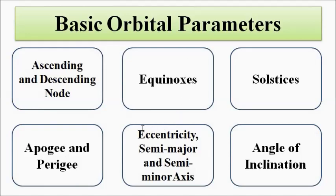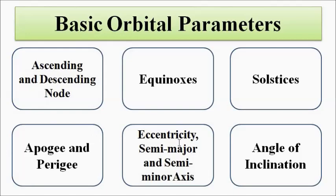A number of things come into play, for example: ascending and descending nodes, equinoxes, solstices, apogee, perigee, eccentricity, semi-major and semi-minor axis, inclination angle, elevation angle, azimuth angle, right ascension of node, and the true anomaly of satellite position. We will discuss these orbital parameters one by one.